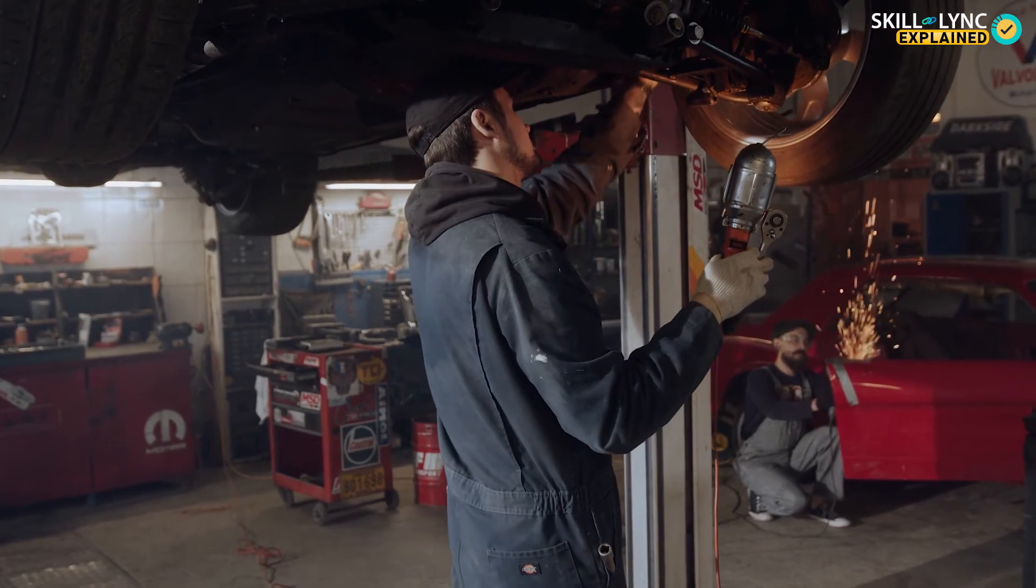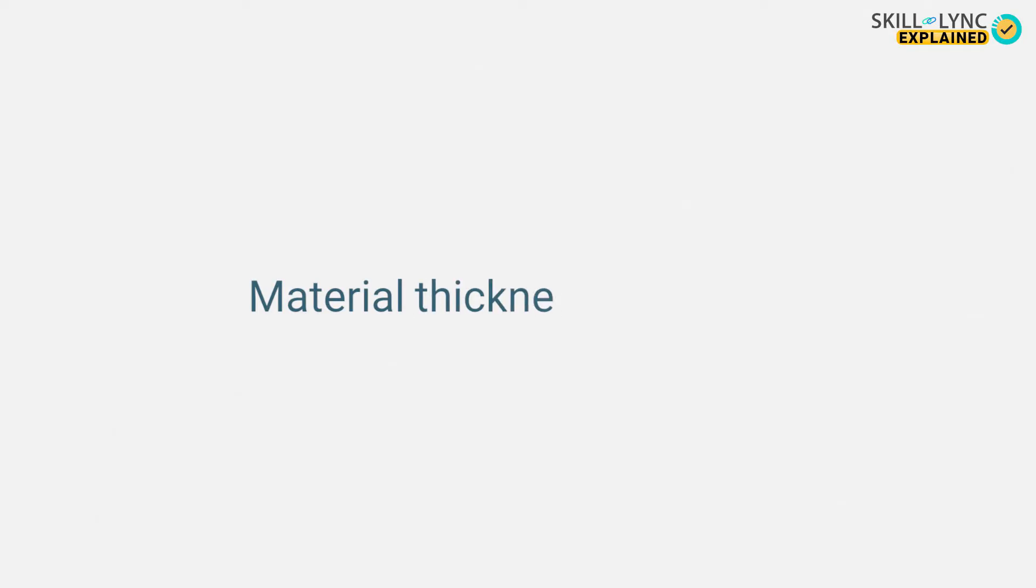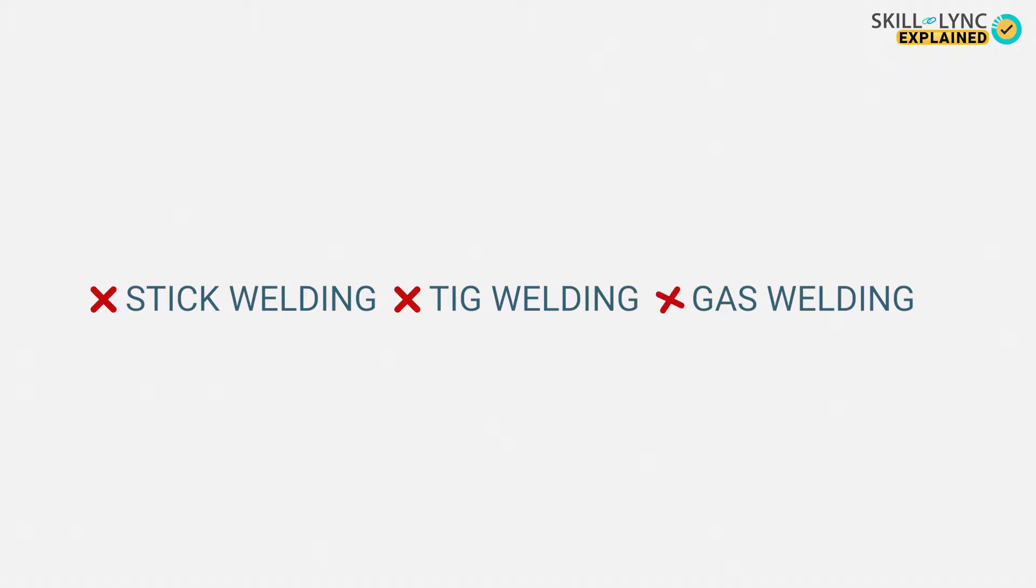They were all used for welding medium to thin metal bars or sheets. But what if we want to weld thick materials, say materials with thickness over 30 mm? Such materials cannot be welded together with conventional welding procedures such as stick welding or TIG welding or even gas welding.